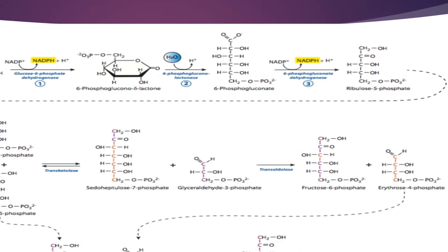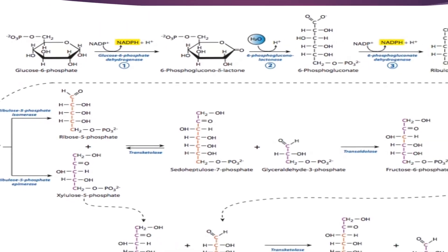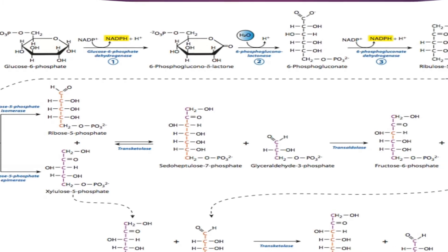The first is the oxidative phase: glucose 6-phosphate is converted to ribulose 5-phosphate. In this phase, the 6-member ring is converted to a 5-carbon chain. This ribulose sugar is also used in the synthesis of nucleotides. Glucose 6-phosphate is converted to glucose 6-phospholactone by the enzyme glucose 6-phosphate dehydrogenase — the phosphate group is converted to a lactone, which is a ketonic group.